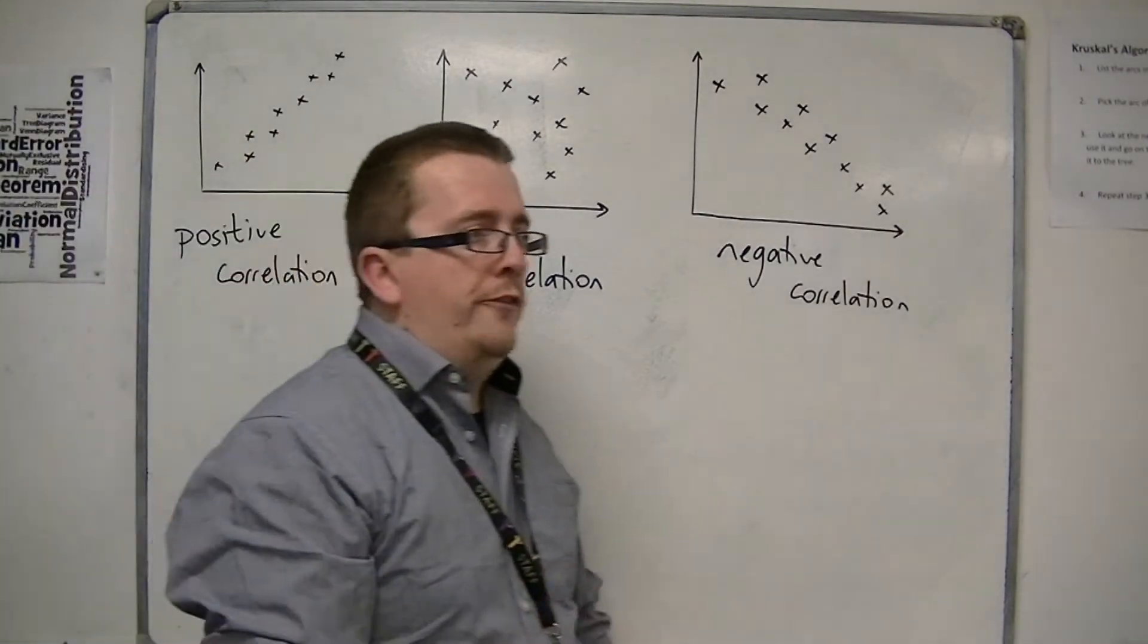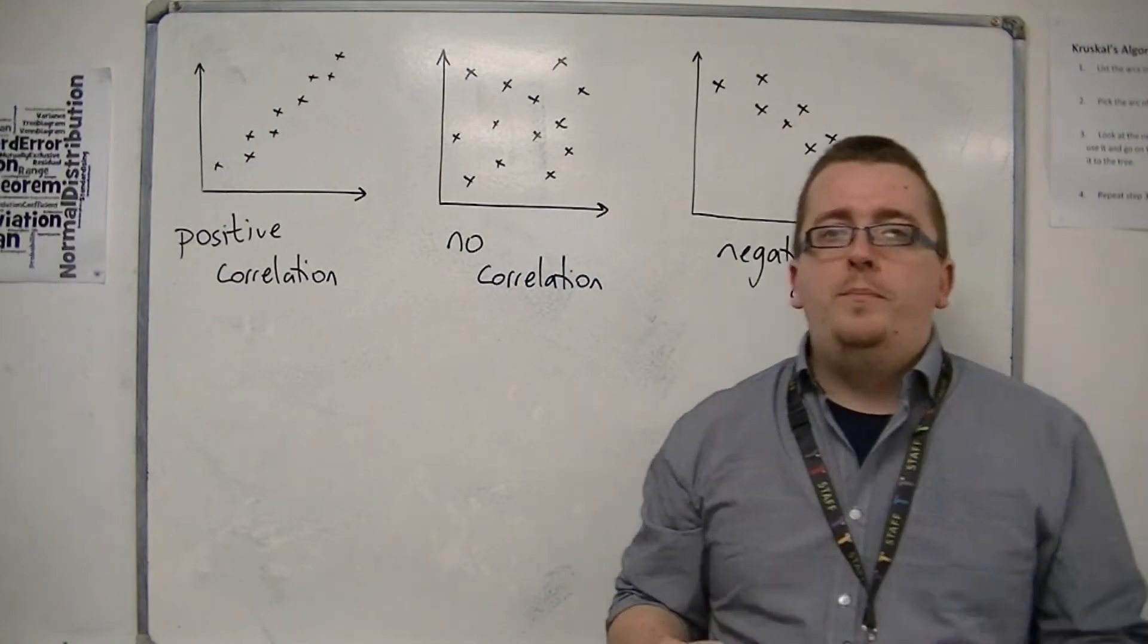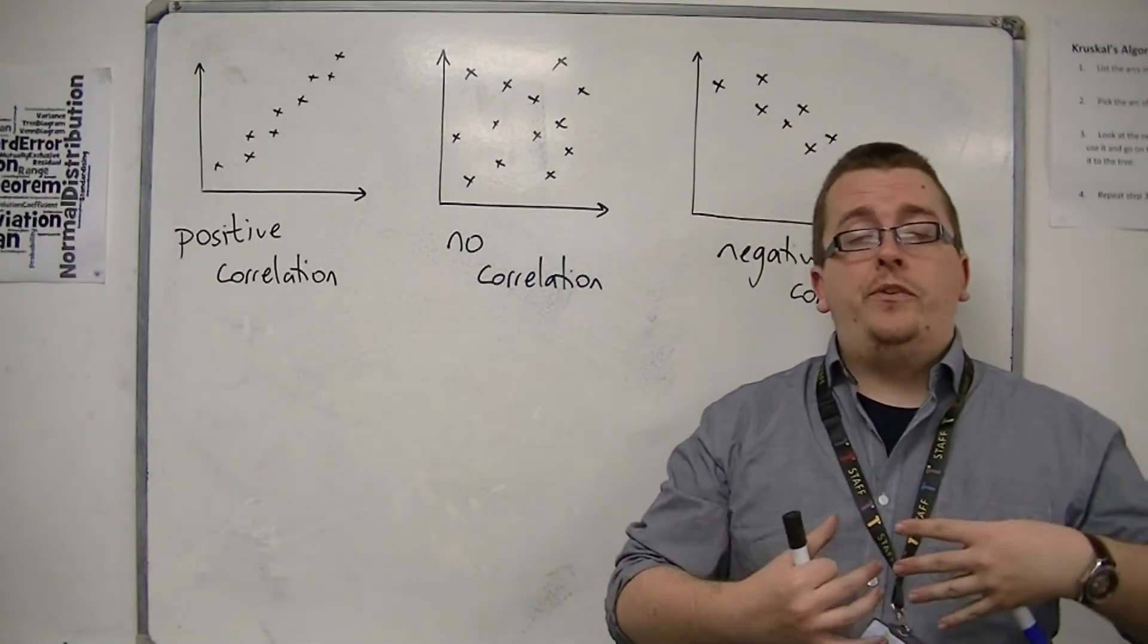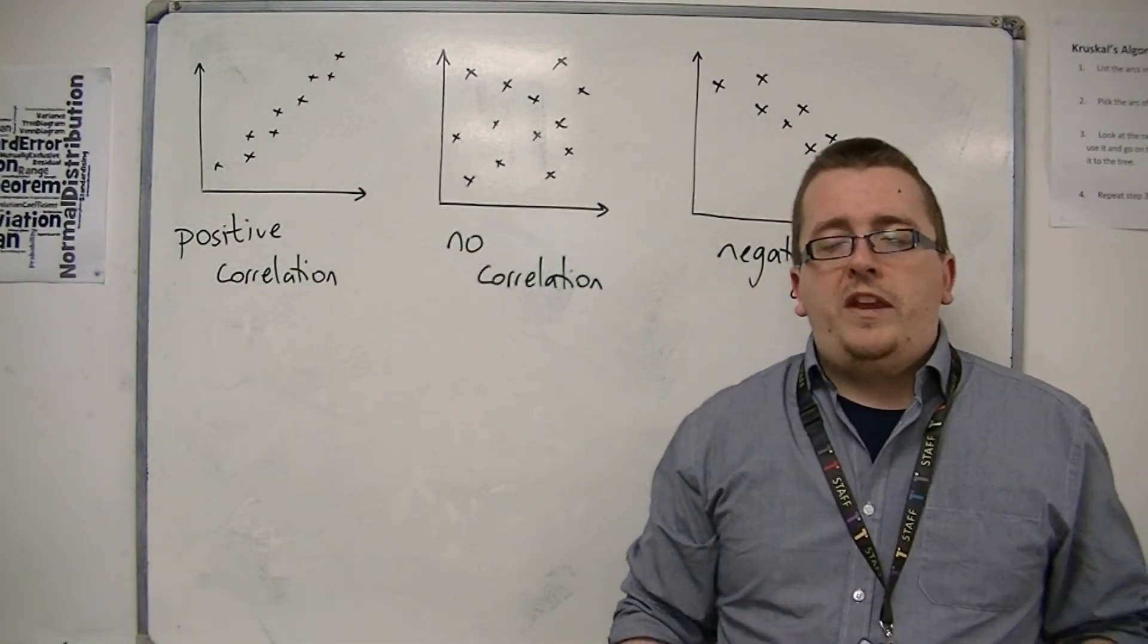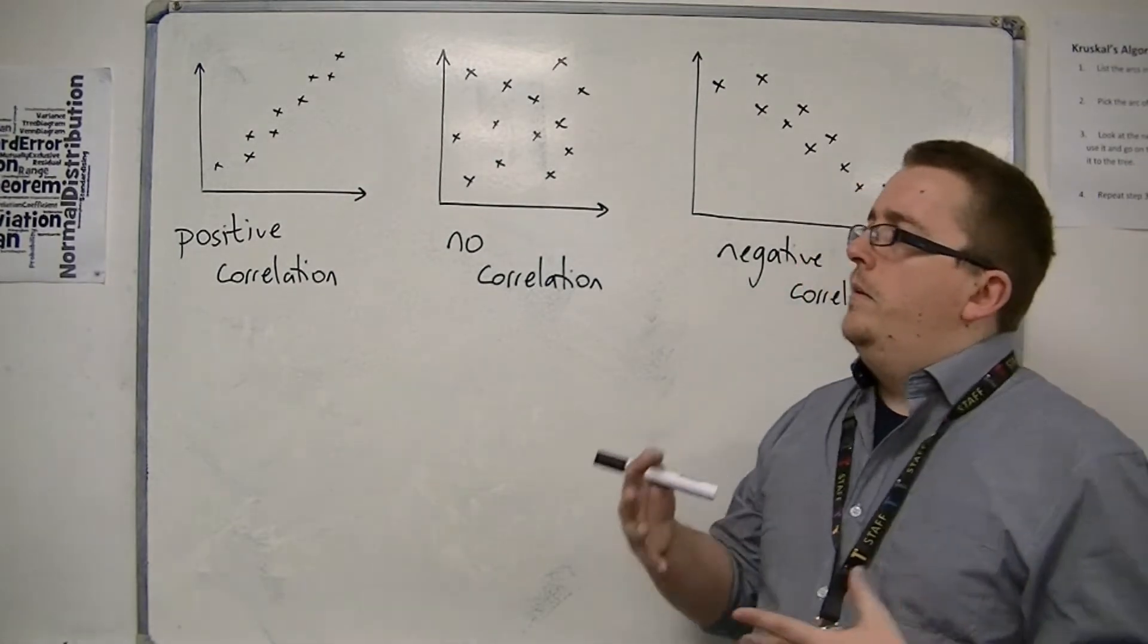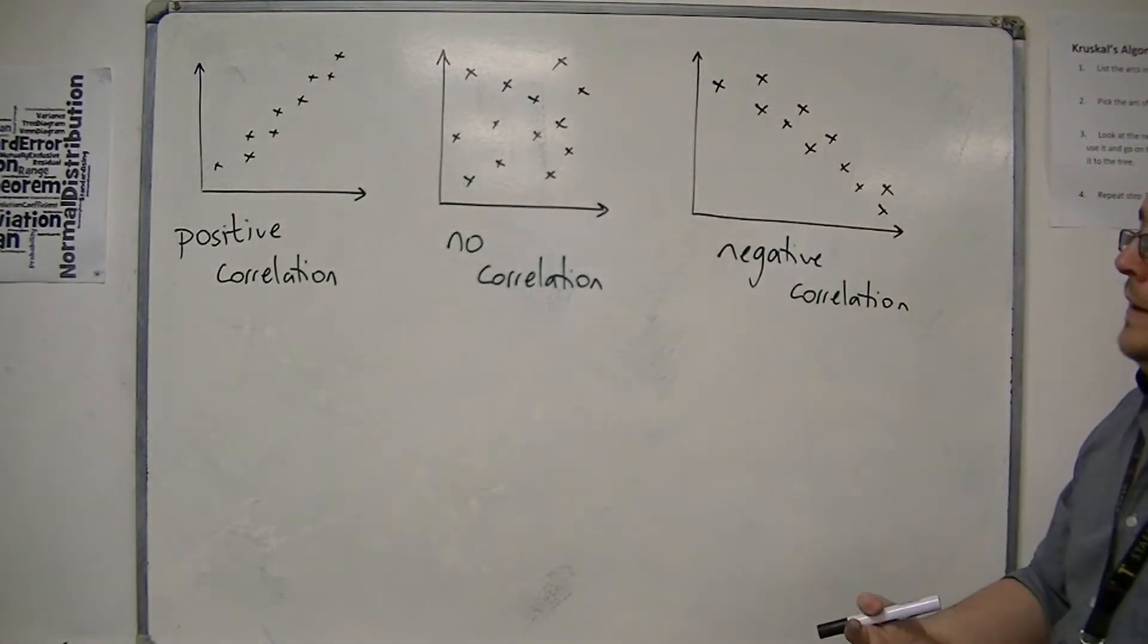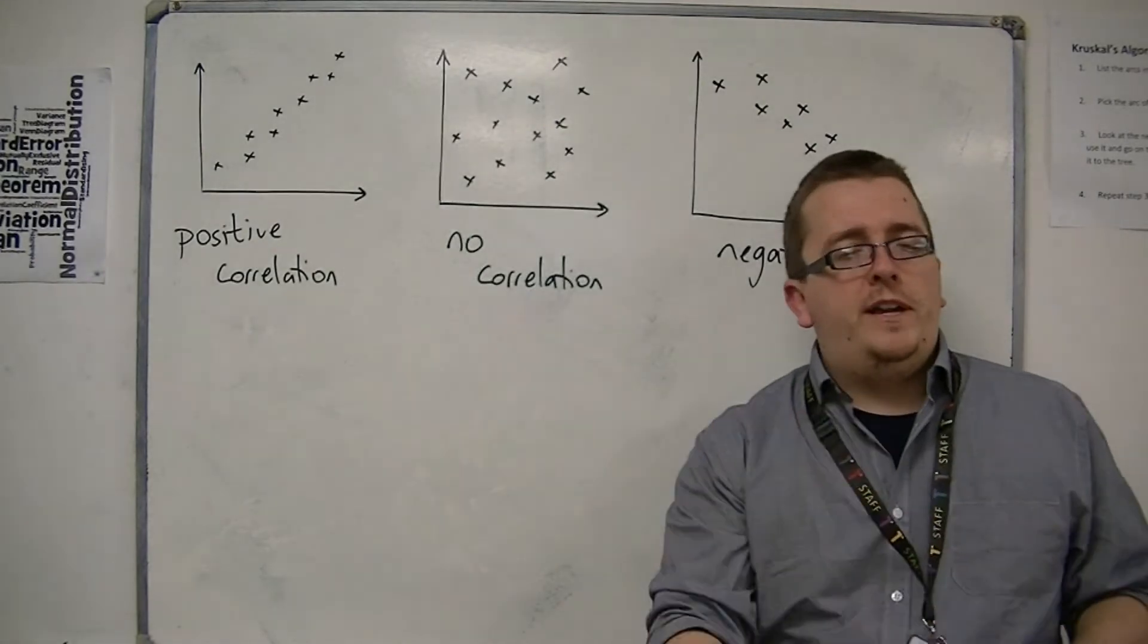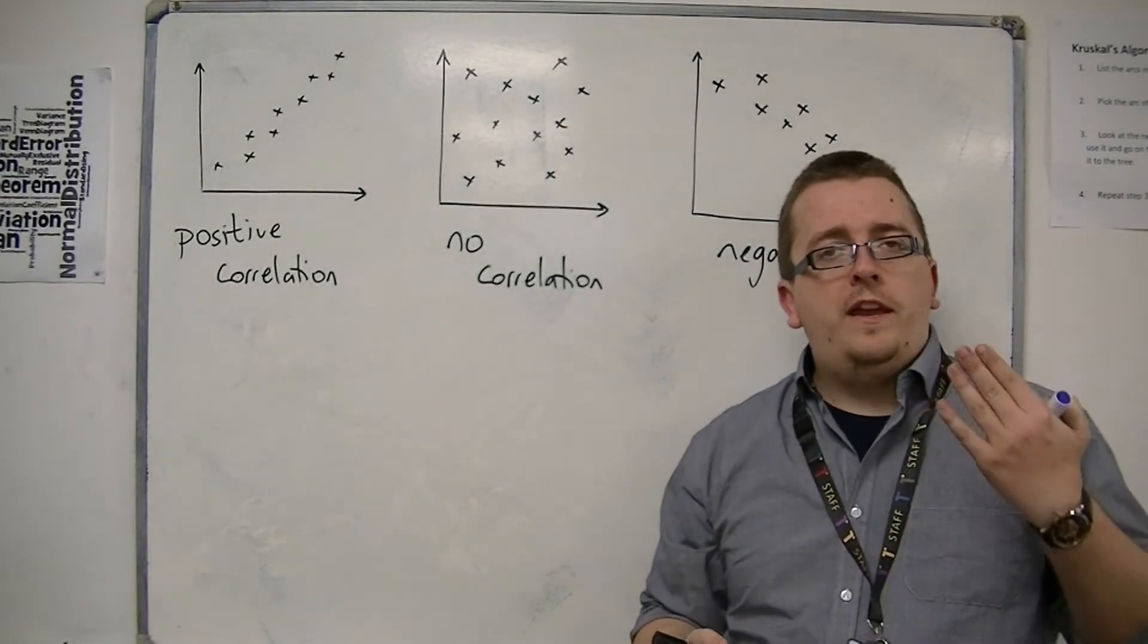One example of positive correlation would be, because the body is in proportion, then we would expect that someone's height would reflect their shoe size.